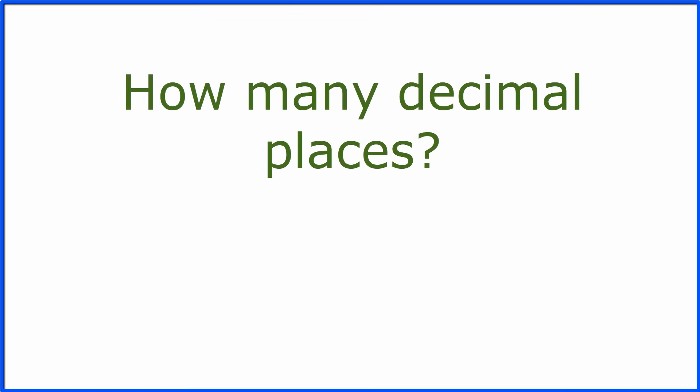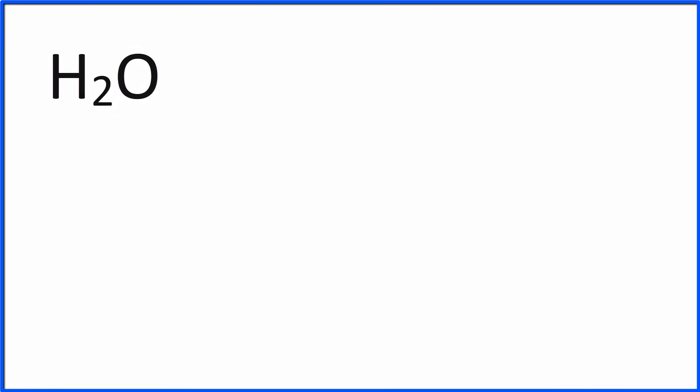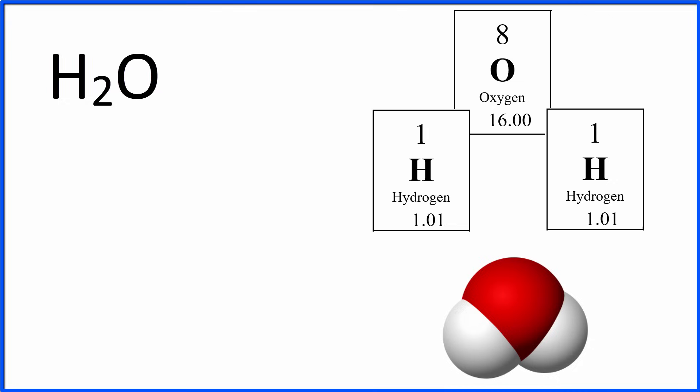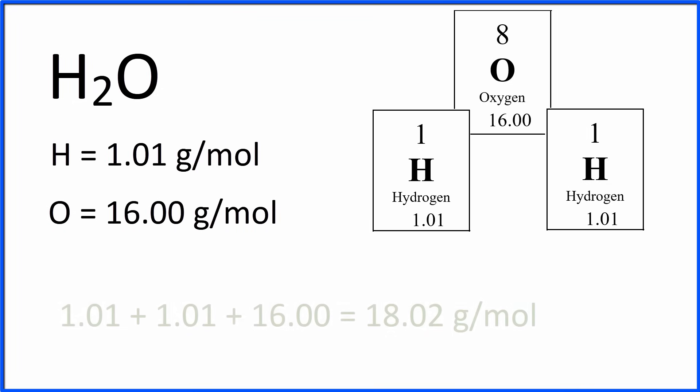You may have noticed that in the previous example, I rounded to two decimal places. Make sure you know what your teacher requires. Let's do an example, H2O. You can think of H2O as being made up of two hydrogen atoms and one oxygen atom. So we go to the periodic table, find the atomic mass for hydrogen and then for oxygen, and then we'll add the two hydrogens plus one oxygen to find the molar mass for H2O.